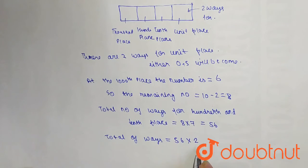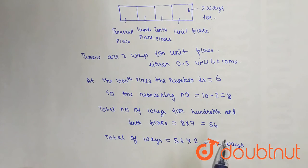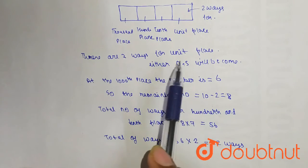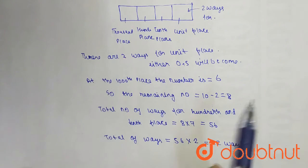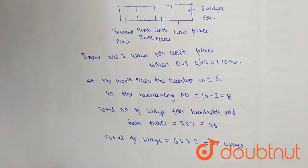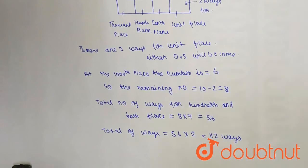So it is equal to 112 ways. So there are 112 ways for which a number which is greater than 6000 but less than 7000 is divisible by 5. So thank you friends, hope you liked the video.